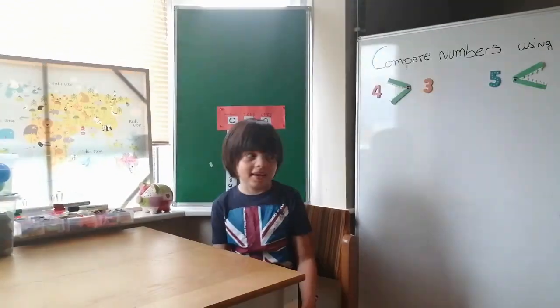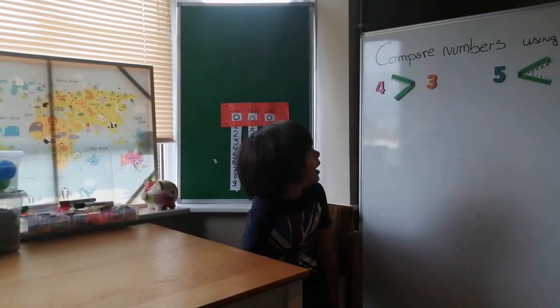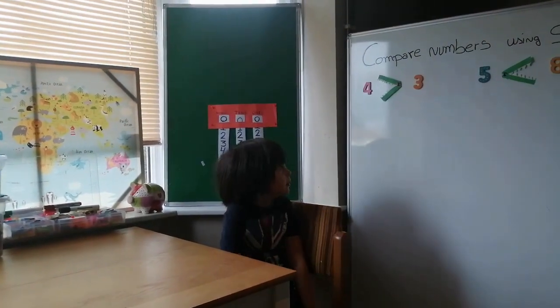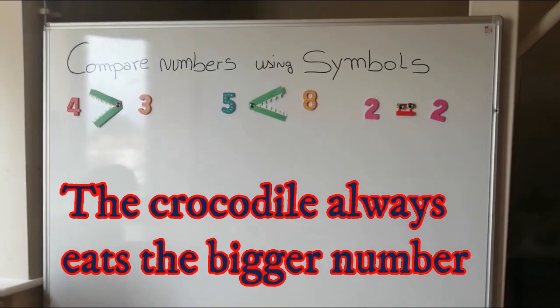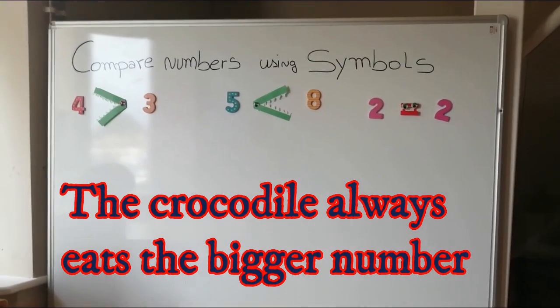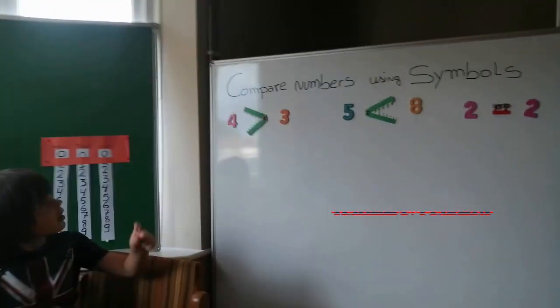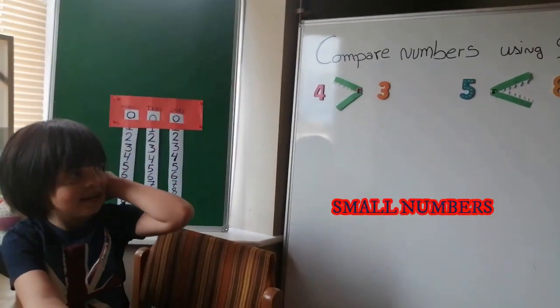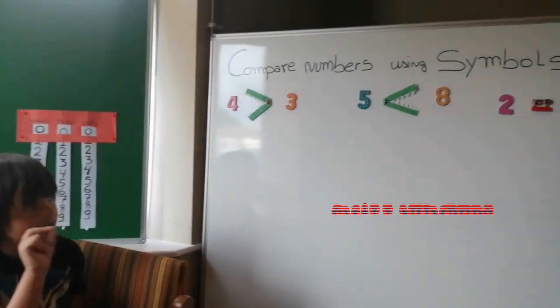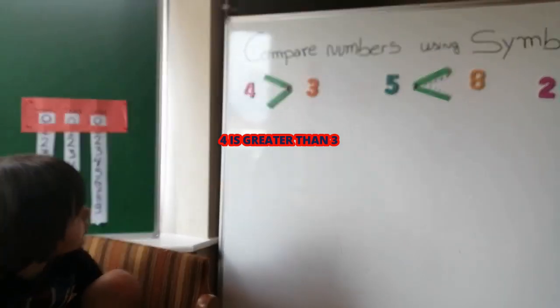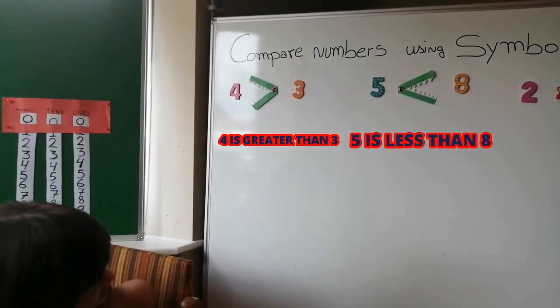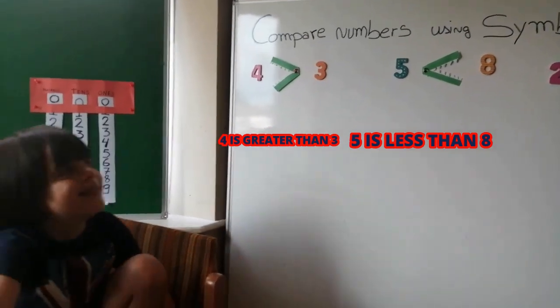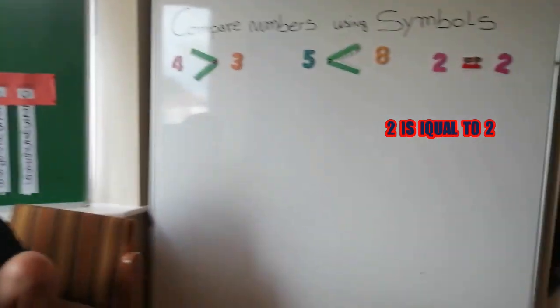Hi guys, today we are comparing numbers using symbols. The crocodile always eats the bigger numbers. The crocodile is eating number four, number eight. Four is greater than three, five is less than eight, and two is equal to two.